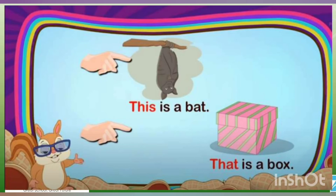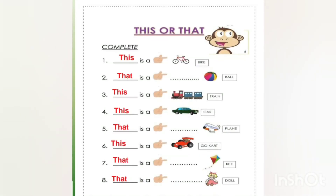This is a bat — the bat is near to us. That is a box — the box is away from us. We use 'this' and 'that' for singular words.